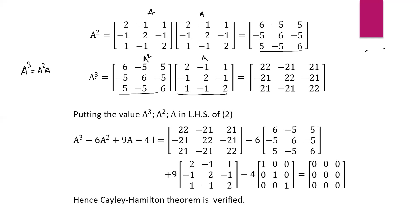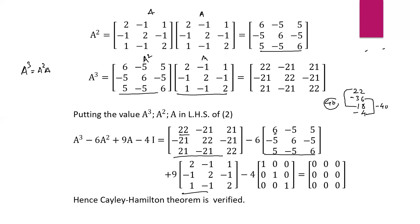Now substitute A², A³ into the equation: A³ minus 6·A² plus 9·A minus 4·I. Verifying one entry: 22 minus 6×6 plus 9×2 minus 4×1 equals 22 minus 36 plus 18 minus 4 equals plus 40 minus 40 equals 0. Similarly every entry gives 0, so we get the null matrix — the Cayley-Hamilton theorem is verified.